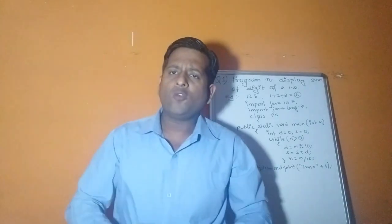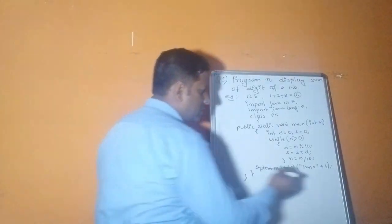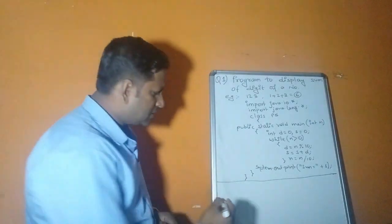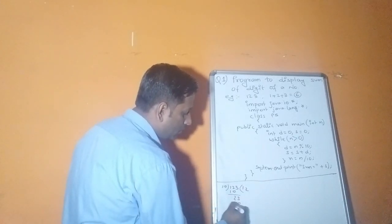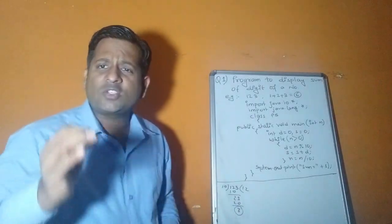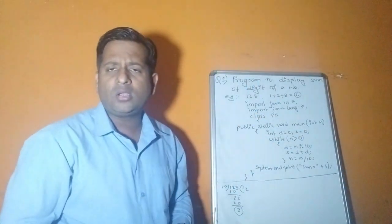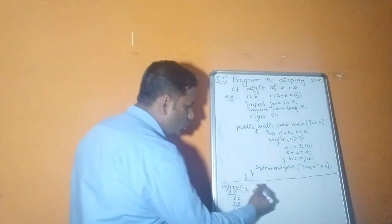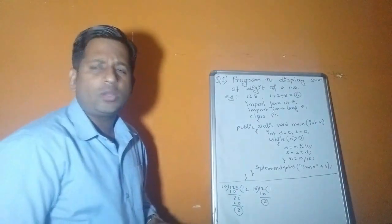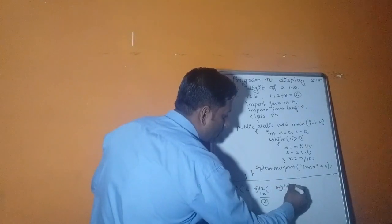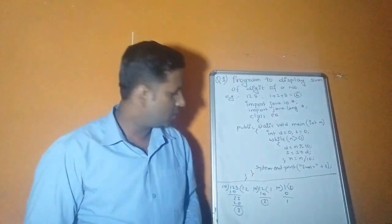There is a simple logic: whenever you divide a number by 10, the remainder is always the last digit of that number, and the quotient becomes the new number. For example, if I divide 123 by 10, the remainder is the last digit and the quotient is the new number. Since everything involves integers, we don't use decimal points.